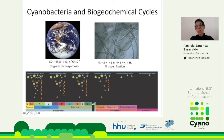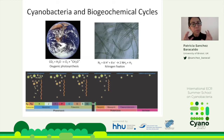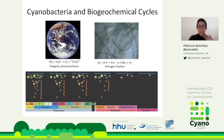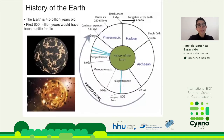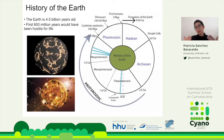Part of my research interest is understanding when cyanobacteria became important as primary producers in the ocean. This is one of the main questions I've been interested in, and it goes back to this introductory slide. If we want to understand how cyanobacteria have contributed to biochemical cycles through Earth history, we need to understand how they have contributed to primary productivity and the biological pump.